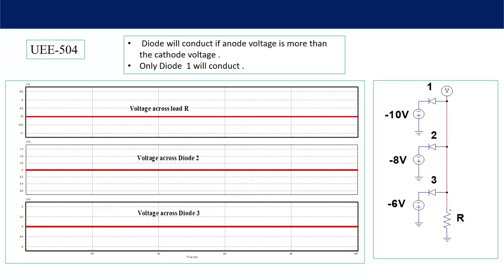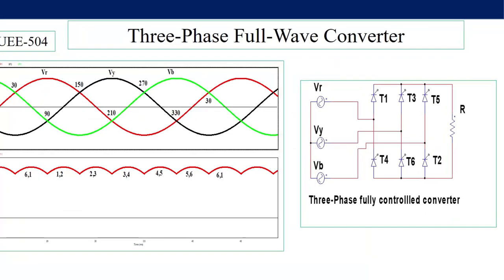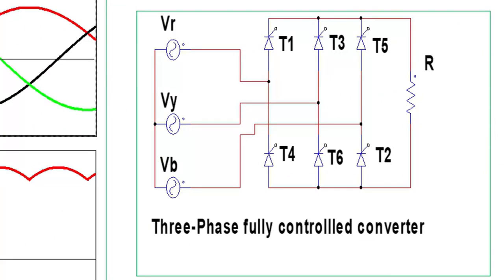Looking at the circuit diagram of the three-phase full wave converter: the three-phase supply Vr, Vy, Vb is connected across three legs. In leg one there are two thyristors T1 and T4; leg two has T3 and T6; leg three has T5 and T2. The top three thyristors T1, T3, T5 will trigger when their voltage is maximum among the three-phase voltages, and the bottom three thyristors T4, T6, T2 will conduct when their cathode voltage is at the negative maximum.